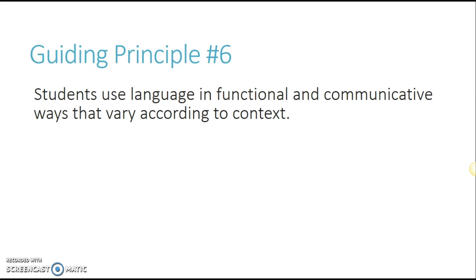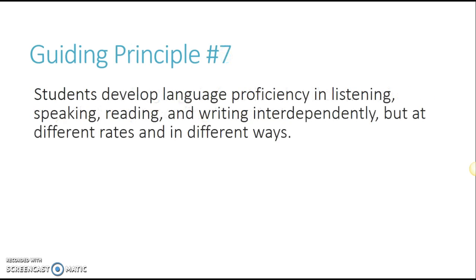They use language in functional and communicative ways that vary according to context. The way that they use language when they are hanging out with their friends is going to be different than the way they use language in their emails, and different than the way they use language in a live lesson. They develop language proficiency in listening, speaking, reading, and writing interdependently, but at different rates and in different ways. A student may be at a level two in writing and a level five in listening, and that's okay — they're going to develop separately but are also connected to each other.